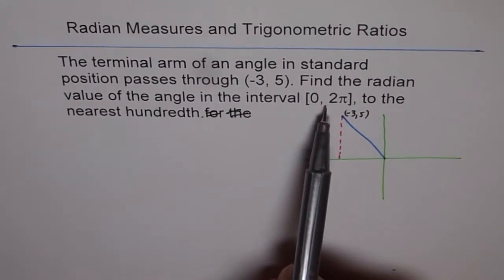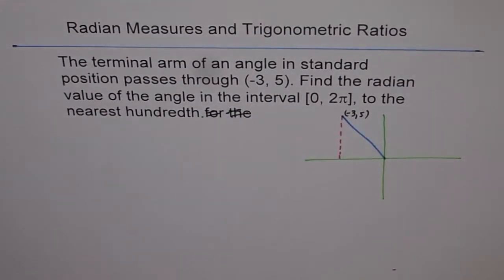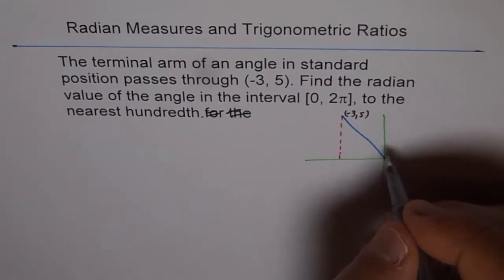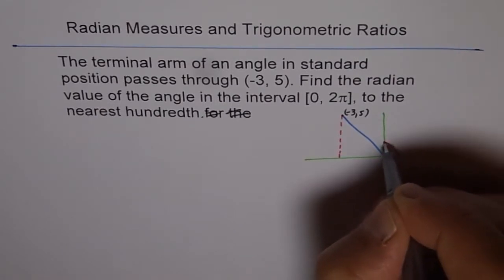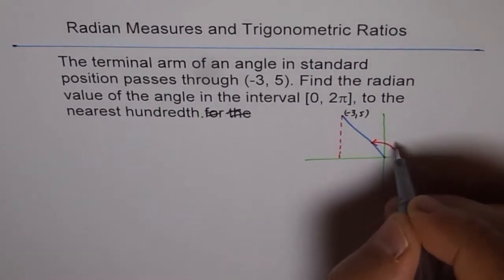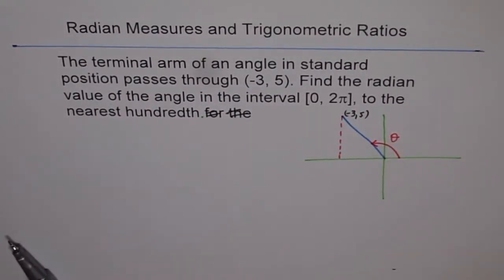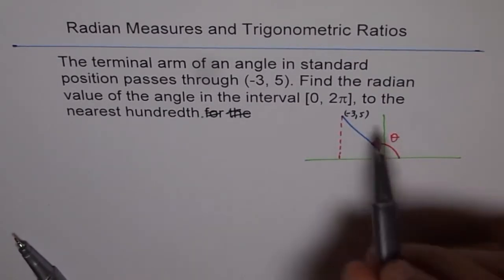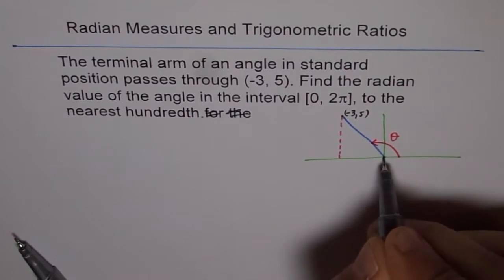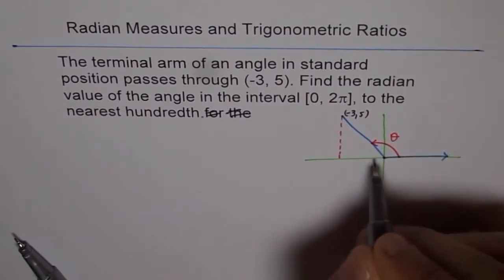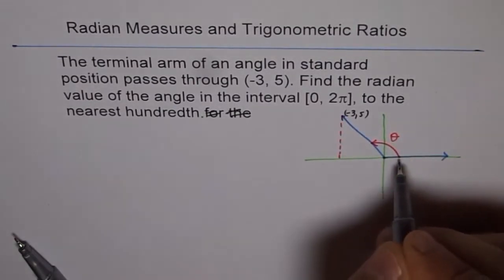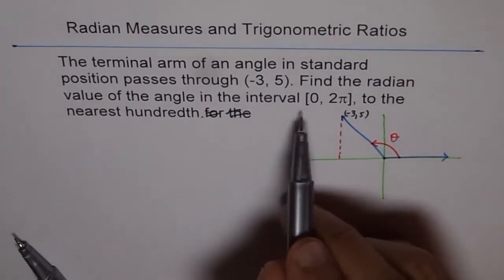When they say find the radian value of the angle in this interval to the nearest hundredth, which angle are we talking about? The angle here is the principal angle, which is from the initial arm to the terminal arm. Let's call this angle theta. Whenever you have an angle in standard position, your initial arm is along the positive x-axis and that's the terminal arm. The angle between the initial and terminal arm is the angle of our interest.